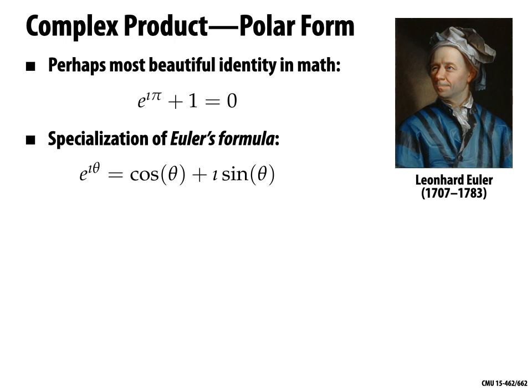From now on, whenever you see e^(iθ), don't think about exponentials or power series — just think: please give me the point on the circle θ away from the x-axis. We can also use this formula to implement the complex product. If instead of Cartesian coordinates we write z1 as magnitude A times e^(iθ) — a direction, a point on the circle — and z2 as magnitude B times e^(iφ), then the product follows the ordinary rules for exponentiation: multiply the leading factors A and B, and add the exponents θ and φ.